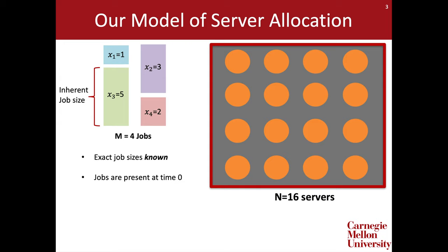We can now exploit parallelism in a couple of ways. First, we can allocate a single server to each job and run these jobs in parallel. Second, because these are parallelizable jobs, we can allocate multiple servers to each individual job — here we've allocated four servers to each job. The question then is: how much faster will a job run on four servers than it would run on a single server? To answer this question, we'll look at a job speedup function.